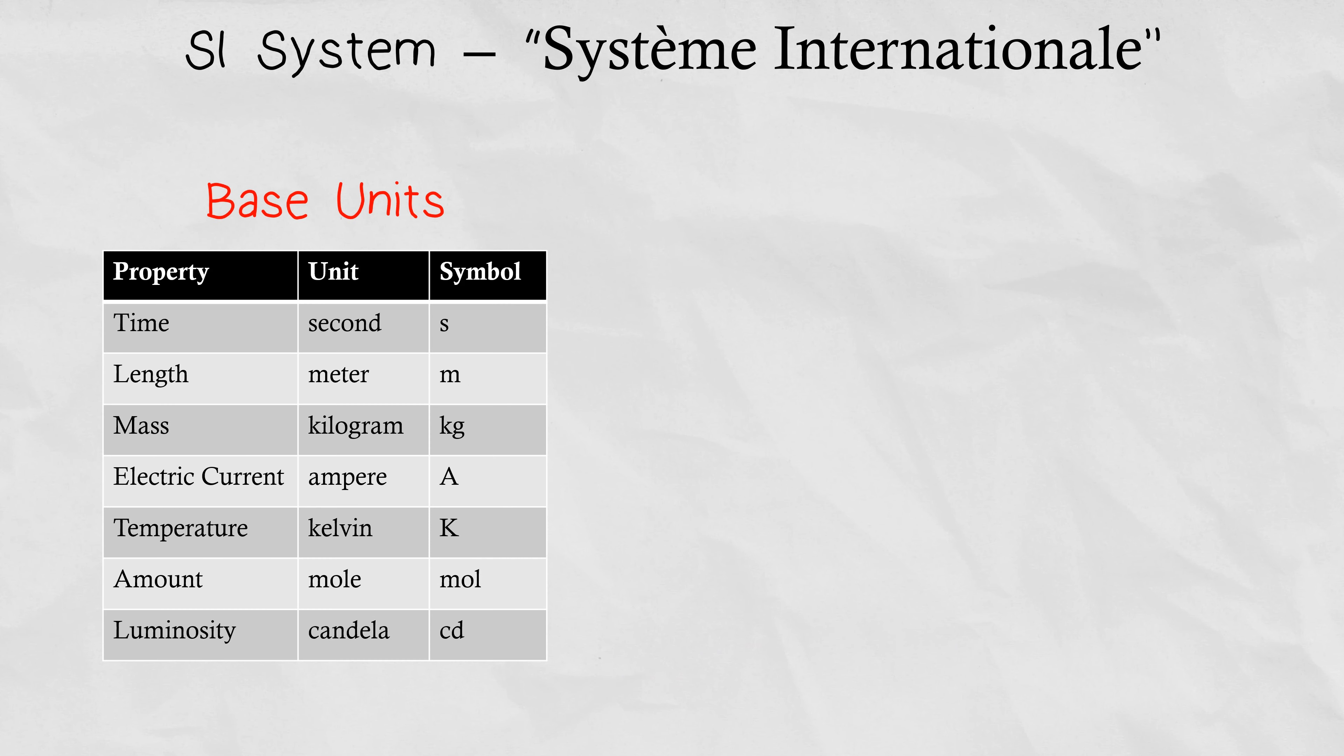The SI system is made of seven basic units, which are time, defined by the second, length, with the meter, mass, with the kilogram, temperature, with kelvin, amount, with a mole, and luminosity, with candela.